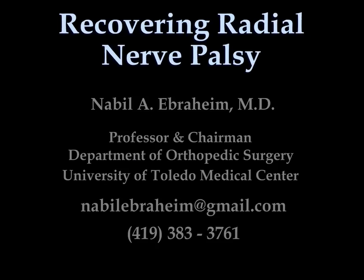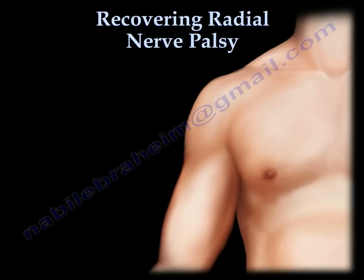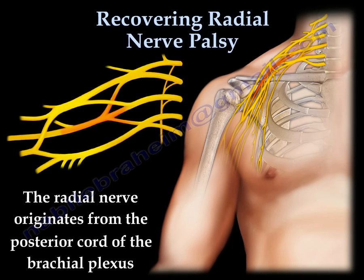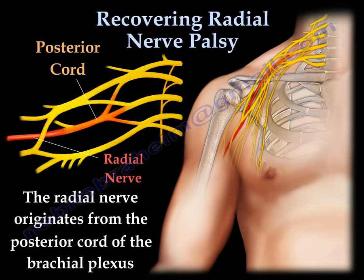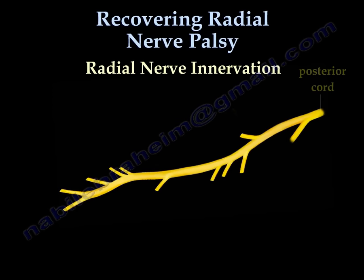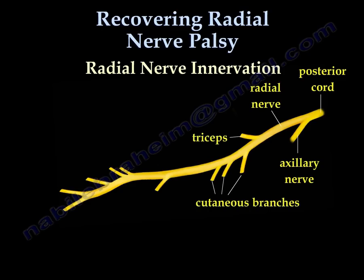Recovering radial nerve palsy. Radial nerve palsy results from acute trauma or compression of the radial nerve. The radial nerve originates from the posterior cord of the brachial plexus. Regarding radial nerve innervation, it starts from the posterior cord, which splits into the axillary nerve and the radial nerve, giving branches to the triceps and cutaneous branches.